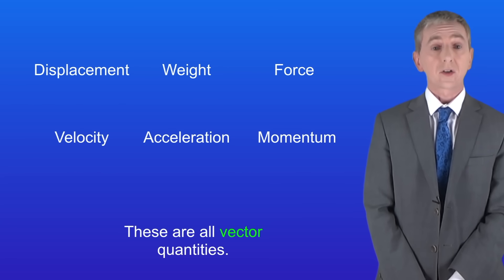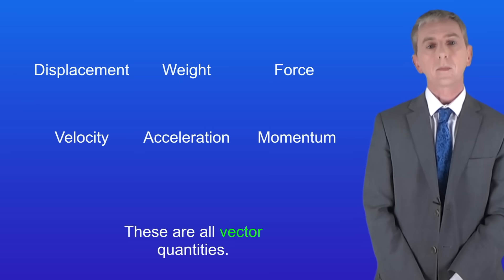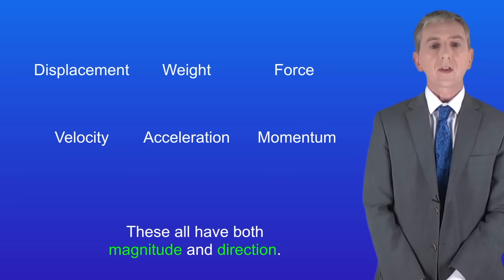Here are some other quantities that we can measure or calculate in physics. We've got displacement, weight, force, velocity, acceleration, and momentum. These are all vector quantities. That's because these all have both magnitude and direction.